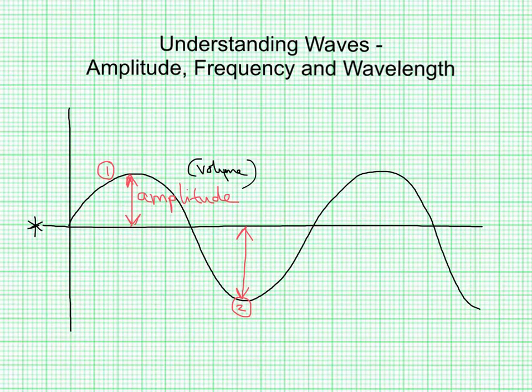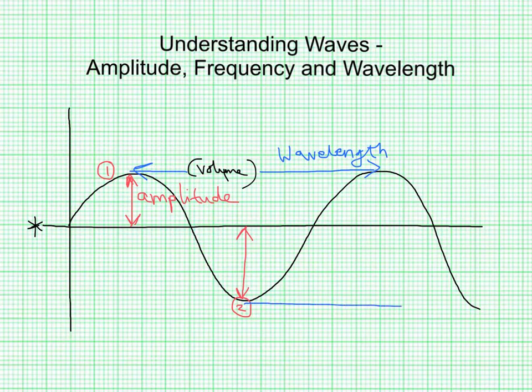Now, wavelength. Wavelength is the distance from one point on a wave to the same point on the next wave. It's usually easier to think from one crest to another, or from one trough to another. For example, from this point here to this point here, that would represent our wavelength. I'll also just draw another line from here to here. Same thing, that would be a wavelength.